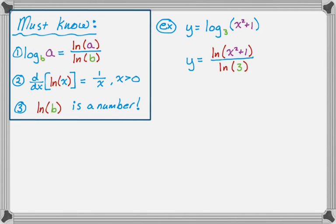If you really know what you're doing, you can skip that. So y is equal to the natural log of x squared plus 1 over the natural log of 3. And now I'm just going to take the derivative. I'm not using the quotient rule because the natural log of 3 is a number, so it's actually a constant multiple rather than a quotient.